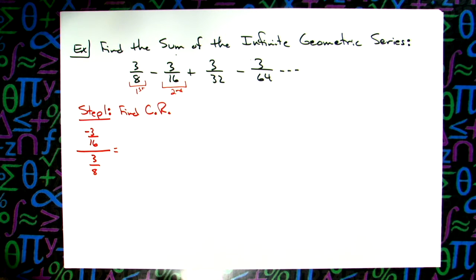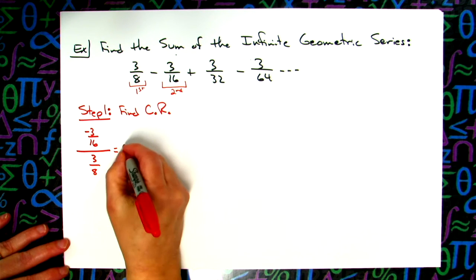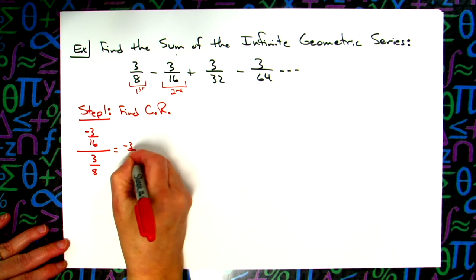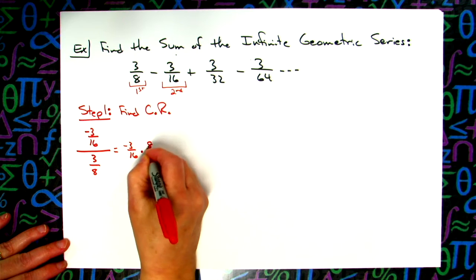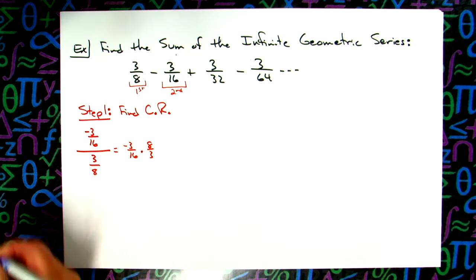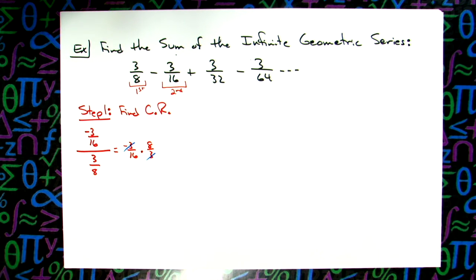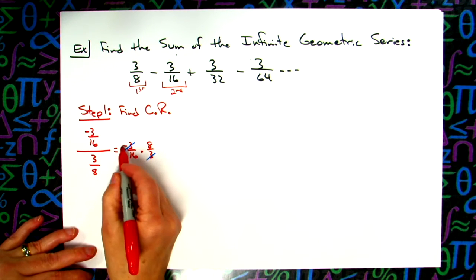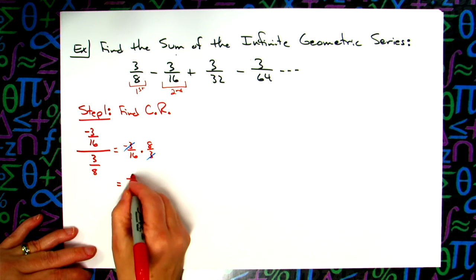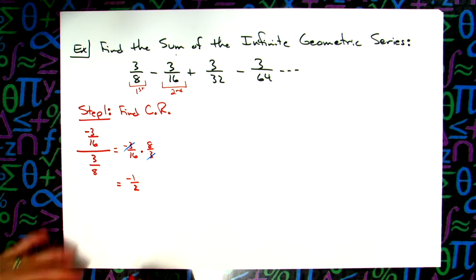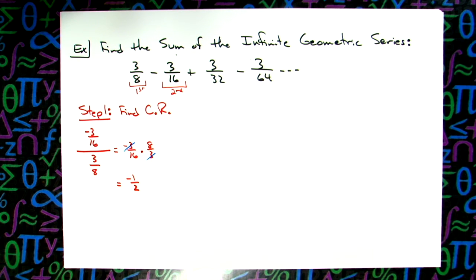Probably keep it, switch it, flip it, it's going to be the easiest for you. Negative 3 over 16 times 8/3. So 3's cross off. 8 over 16 reduces to lowest terms of 1/2, and don't forget the negative sign. So my common ratio is negative 1/2.